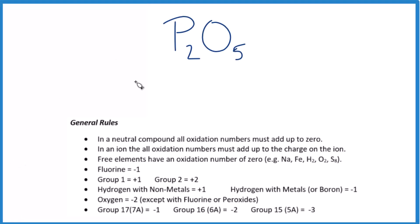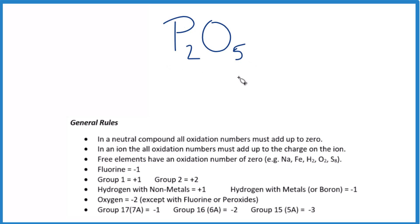Let's find the oxidation numbers for each element in P₂O₅. This is actually an empirical formula — this compound is found as P₄O₁₀ — but let's just work with this one and find these oxidation numbers.